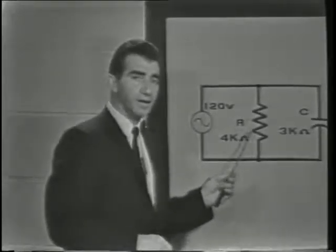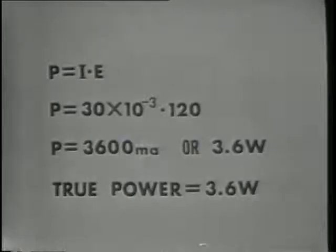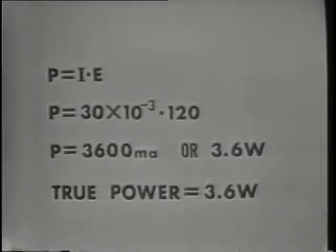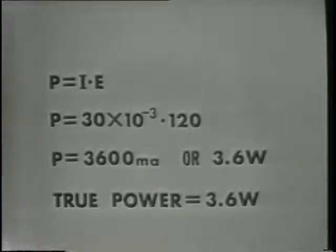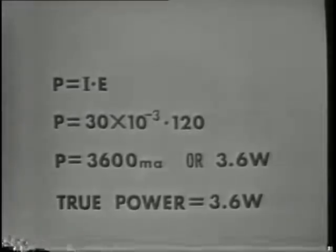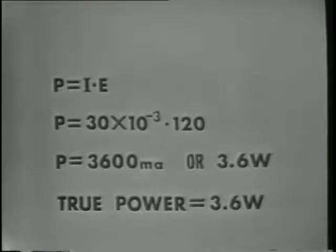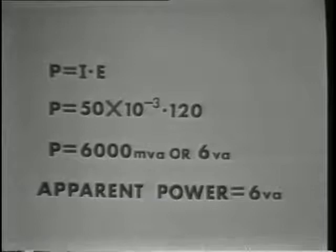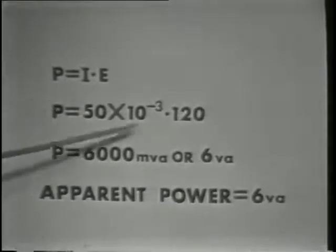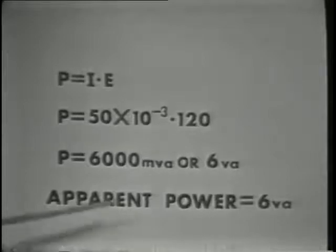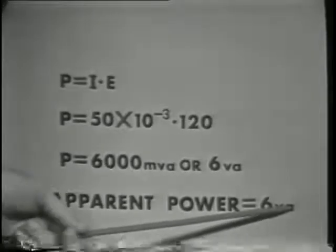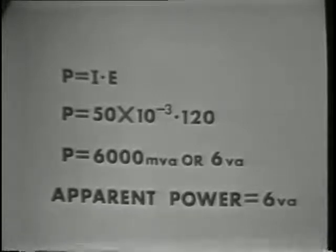Only the resistor dissipates power, but both components draw current. From our previous calculations, IR is equal to 30 milliamps. Applying the power formula P equals I times E, the power dissipated in the circuit is 3.6 watts. This is true power, the power actually dissipated by the resistor. However, if we apply the power formula to the entire circuit using total current of 50 milliamps and EA of 120 volts, the circuit apparently uses 6 volt-amperes. Apparent power is measured in volt-amperes rather than watts because not all of this power is dissipated as heat.